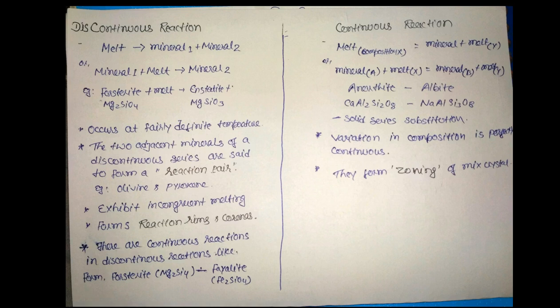The answer is yes. Olivine is a mineral group ranging from forsterite (Mg-rich olivine) to fayalite (Fe²⁺-rich olivine). Similar to the plagioclase series, there is a continuous change in composition within the olivine series as Mg²⁺ is progressively replaced by Fe²⁺. So there is indeed a continuous reaction series within the discontinuous reaction series.